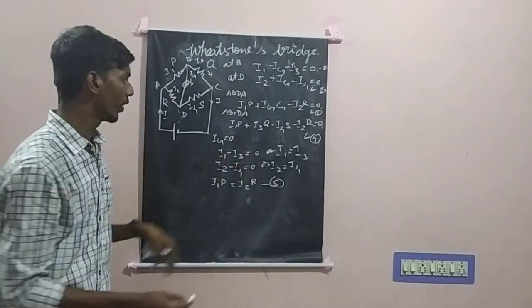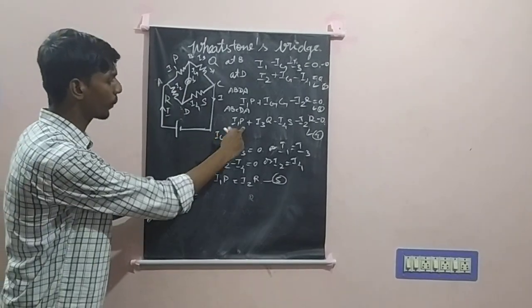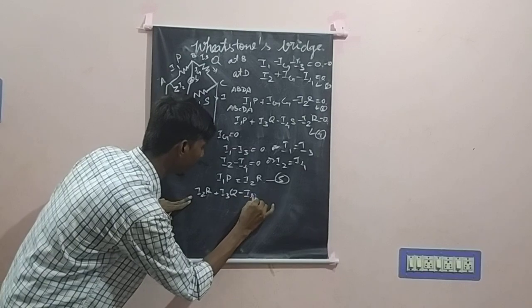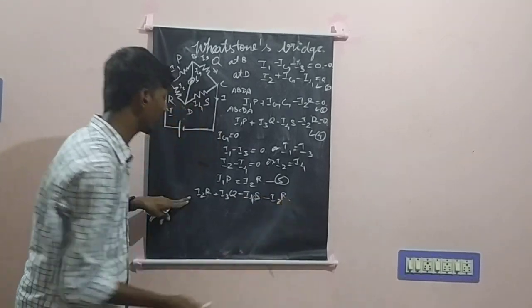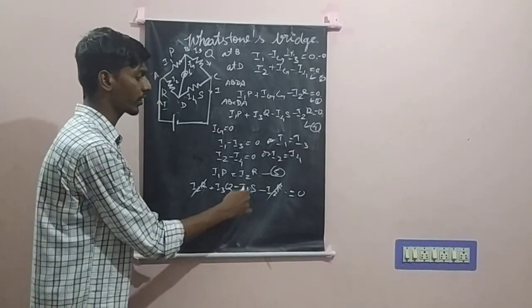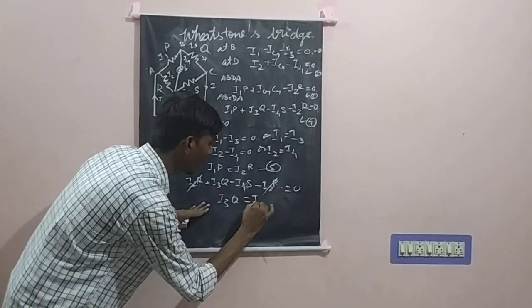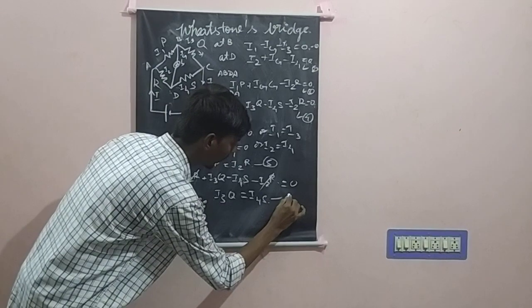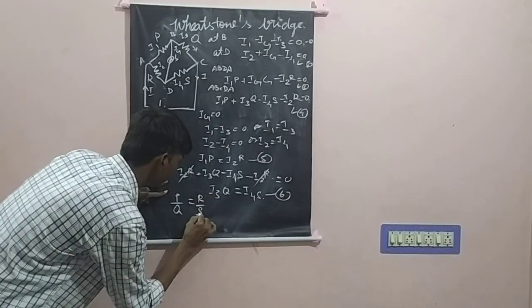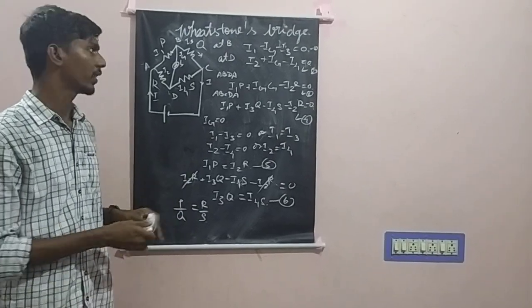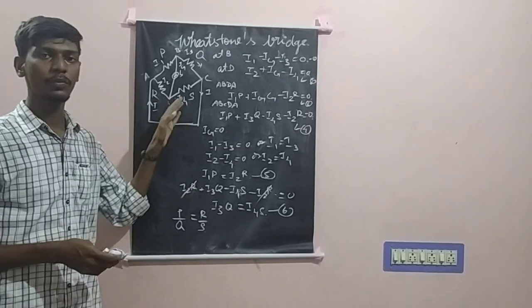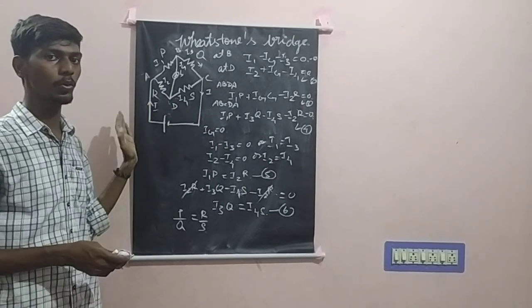Applying equation 5 into equation 4, we replace I1P with I2R: I2R plus I3Q minus I4S minus I2R equals 0. The positive and negative I2R terms cancel, and rearranging gives I3Q equals I4S — let this be equation 6. Dividing equation 5 by equation 6, we find P/Q equals R/S. This is the balancing condition of the Wheatstone bridge. Only under this condition will the galvanometer show null deflection, allowing us to find an unknown resistance if the other three are known, or to compare two resistances against two others.